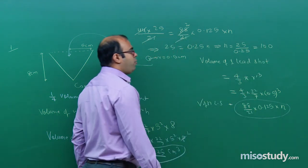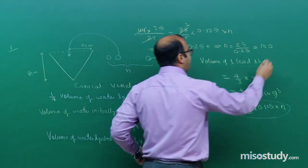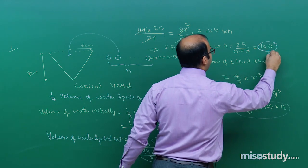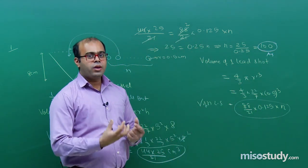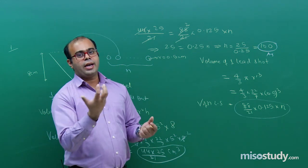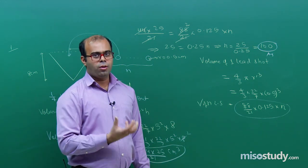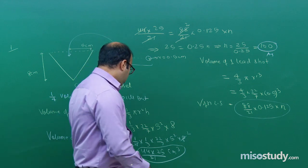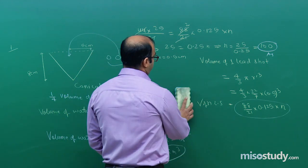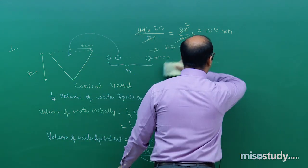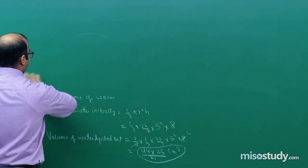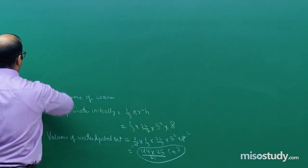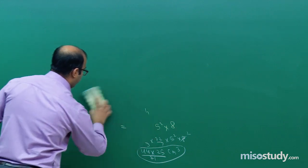So we need 100 lead shots to be dipped into the vessel for one-fourth of the water to spill out — that volume equals the combined volume of 100 spherical lead shots. This illustrates the type of question that can arise with combinations of solids.